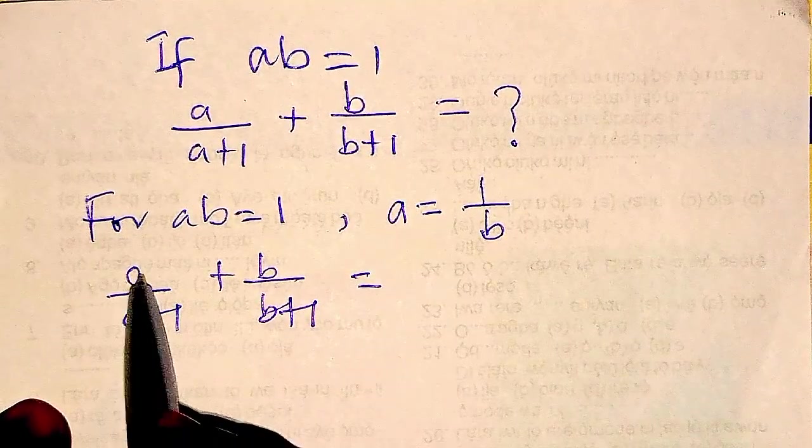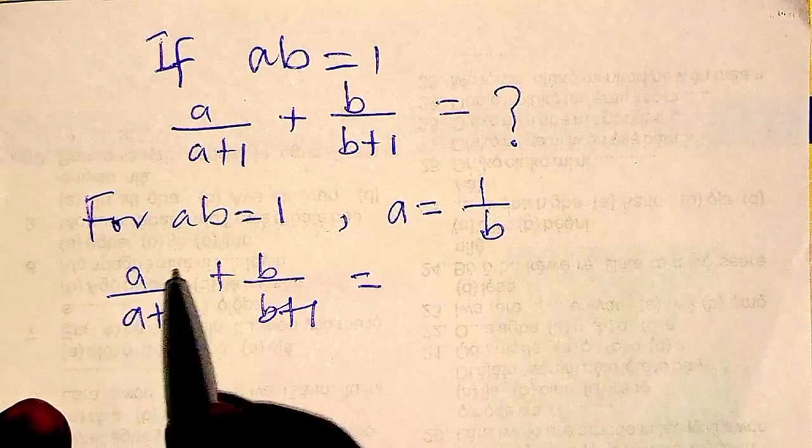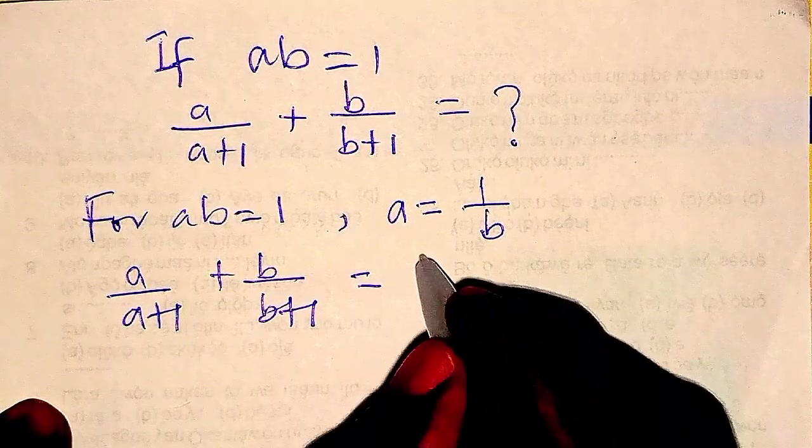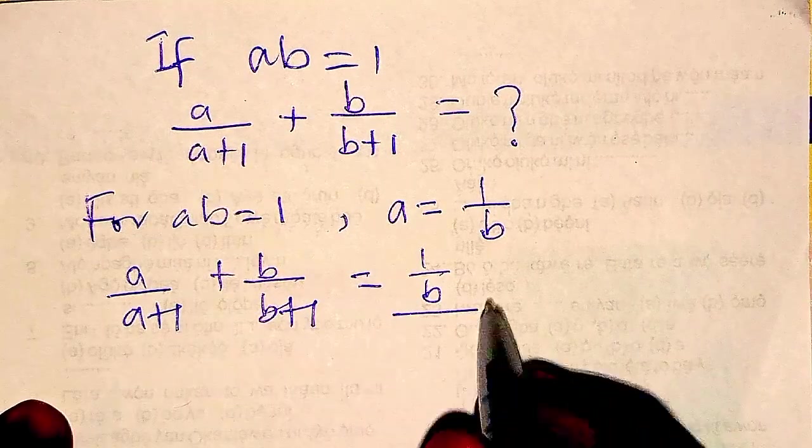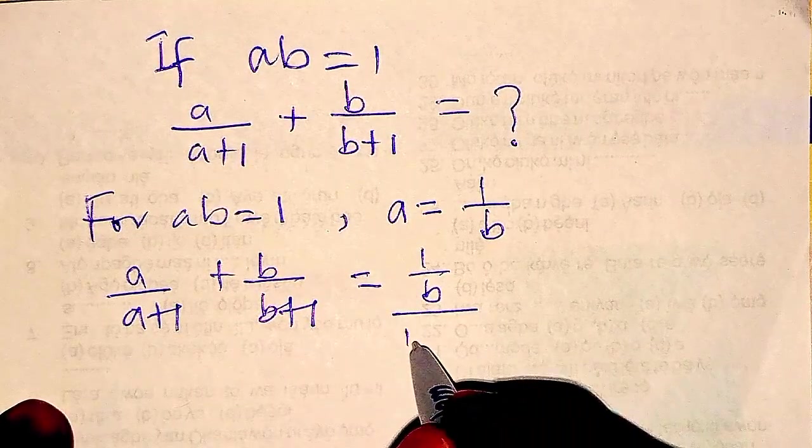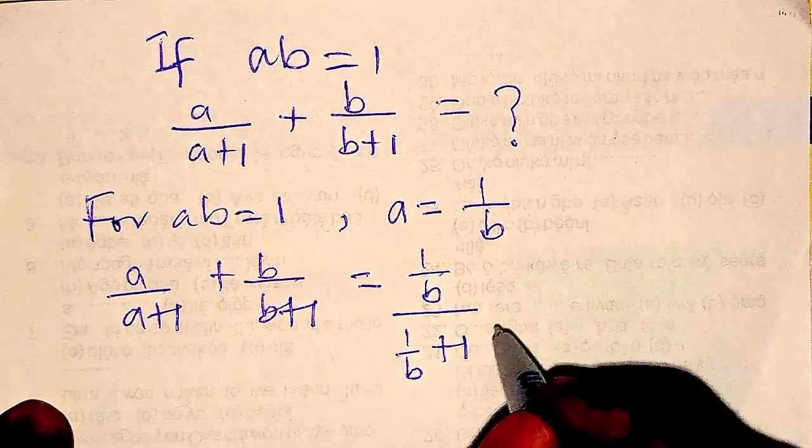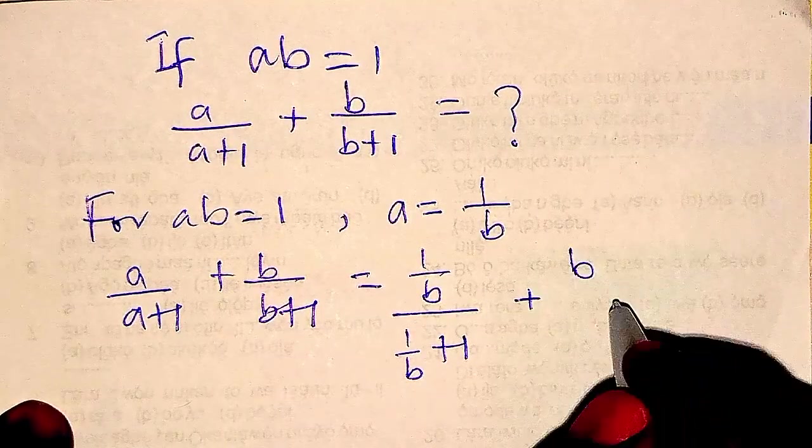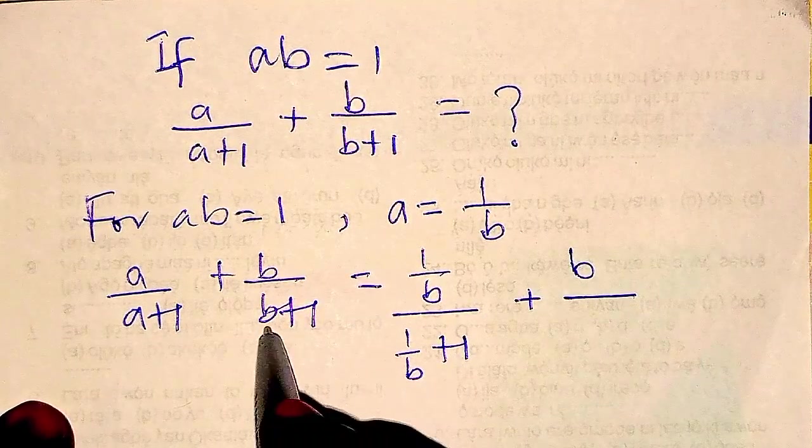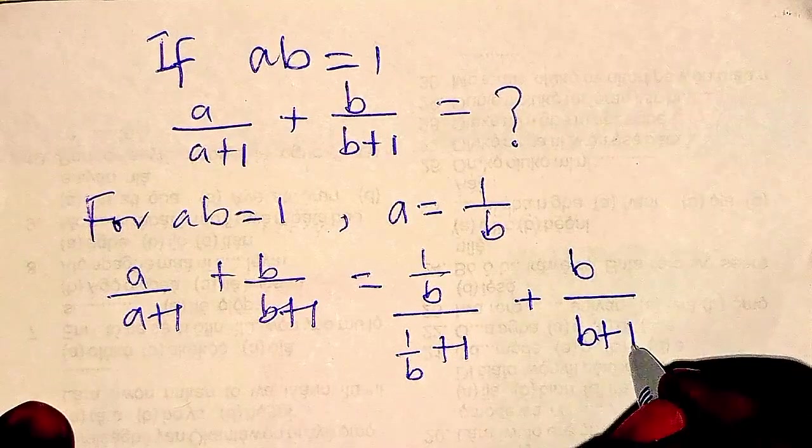So equals, now anywhere I see this A, I will replace it with 1 over B. I have 1 over B, then over A, here is what? 1 over B plus 1, then plus the B I have here already, divided by B plus 1.